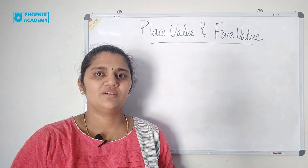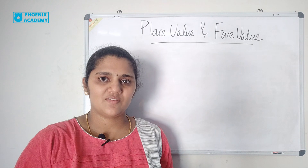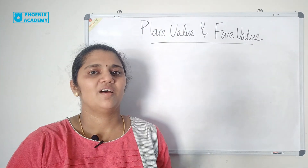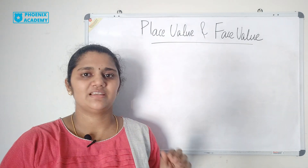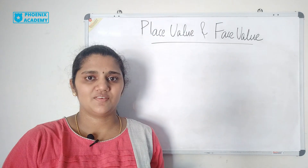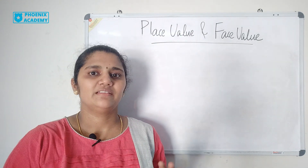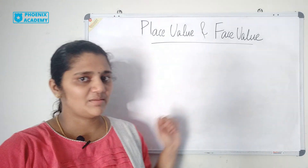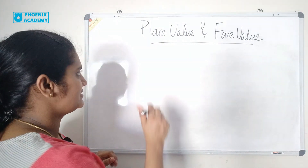So the place value is the place or position of a digit in a given number. Face value is the digit itself. Let us see some more examples.